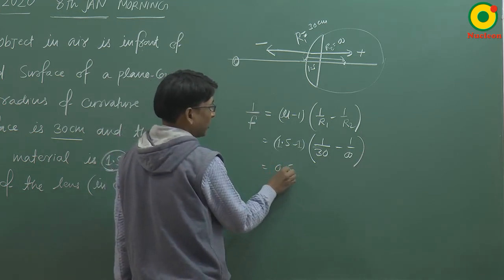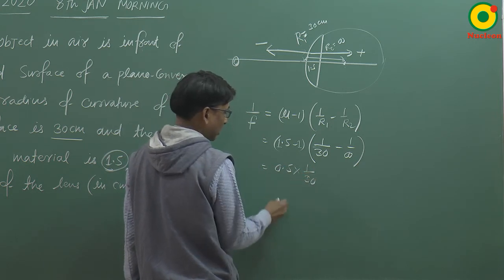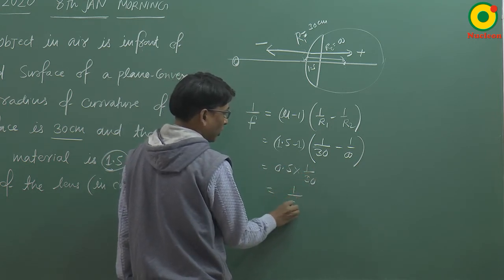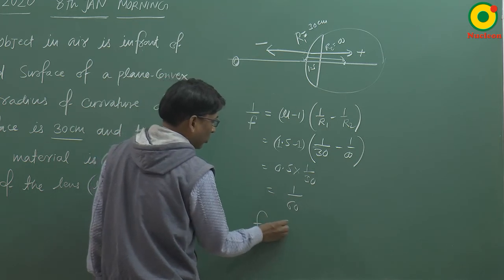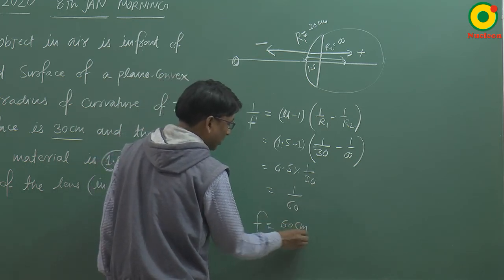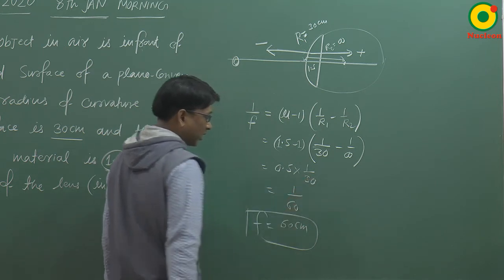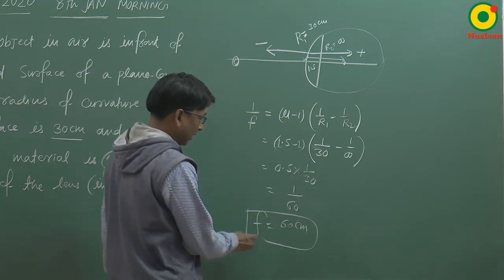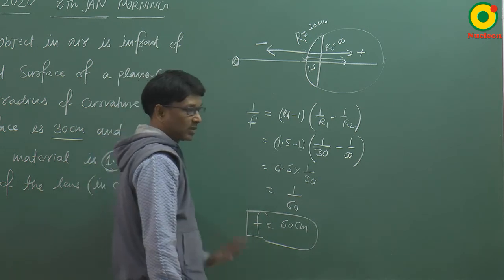तो यह हो गया: 0.5 × (1/30) = 1/60. यानी जो focal length है वो आ गया 60 centimeter. क्योंकि 30 centimeter में दिया था, तो focal length भी 60 centimeter में आया है. तो यह answer है.